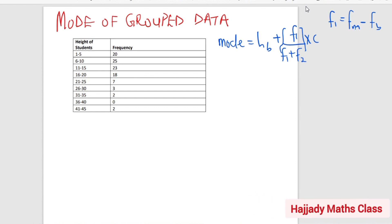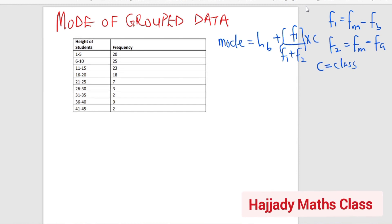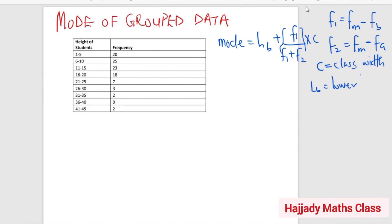So looking at this now, this is our frequency of the modal minus the frequency before. And also, our F2 is the same thing as the frequency of the modal class minus the frequency after it. And here, our C is the class width. That is, you can call it the class interval. Also, that means the difference between the lower and the upper. And LB is the lower boundary.